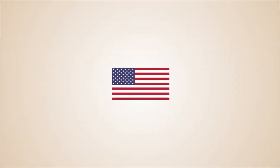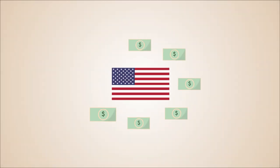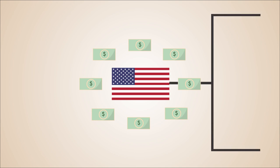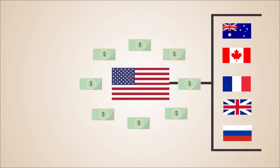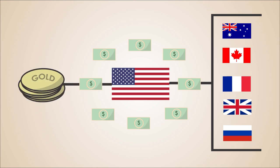Under the agreement, the United States became the only country that had the ability to print dollars. Countries agreed to maintain a fixed exchange rate with the US dollar, as the US dollar would still be backed by gold at the price of $35 per ounce.